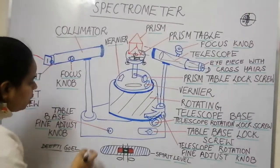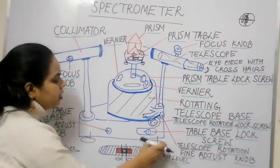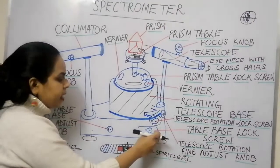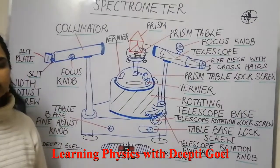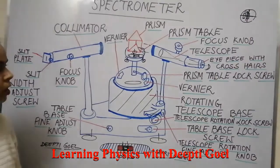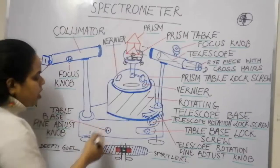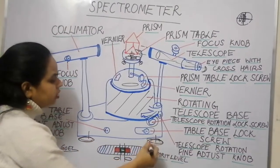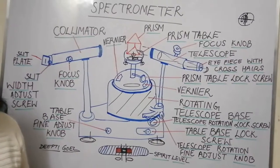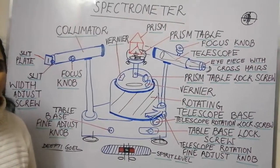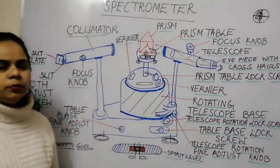Some spectrometers also have screws at the bottom of the instrument itself. By tightening or loosening these base screws, the overall leveling of the spectrometer can be achieved. Leveling the prism table and the spectrometer is a necessary precaution that must be performed before conducting any experiment.